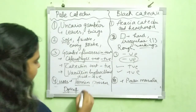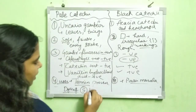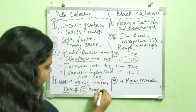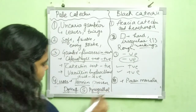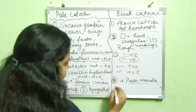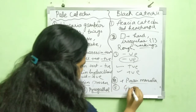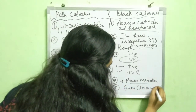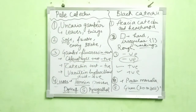The fifth point: under pale catechu, pyrogallol chemical constituent is present, and gum is also present — approximately 20 to 30% gum is present. Thank you for watching.